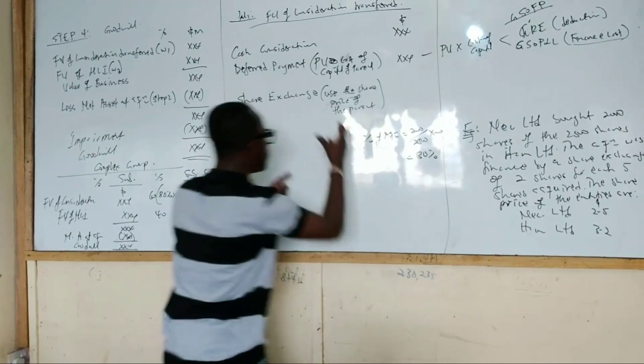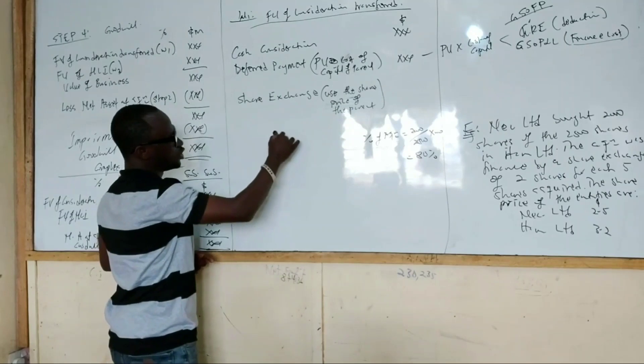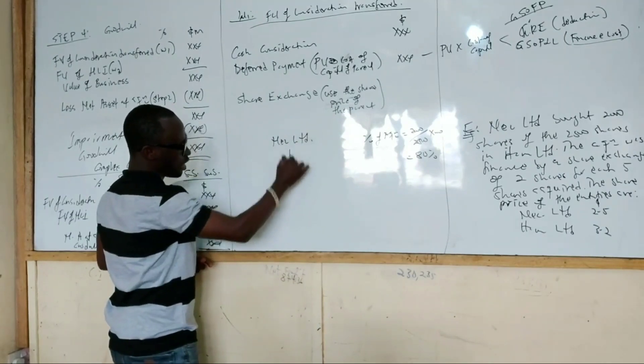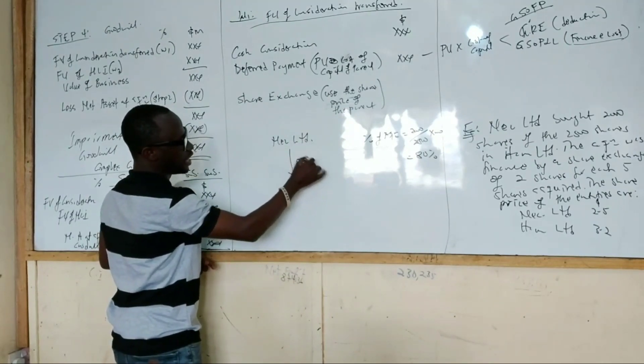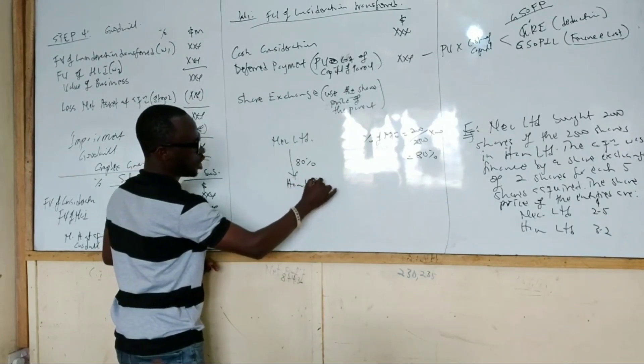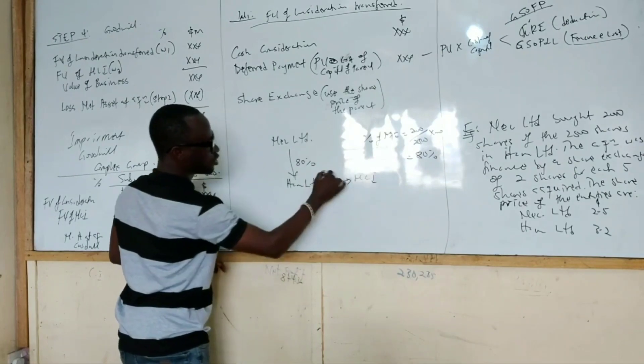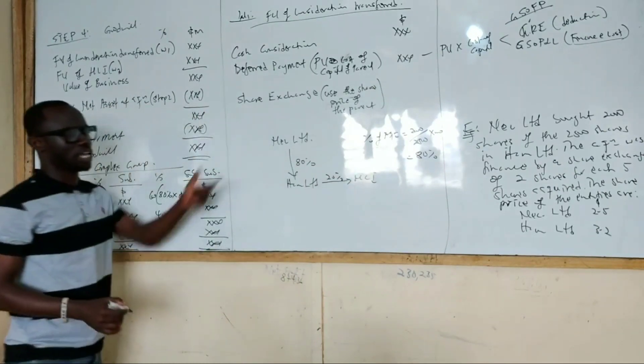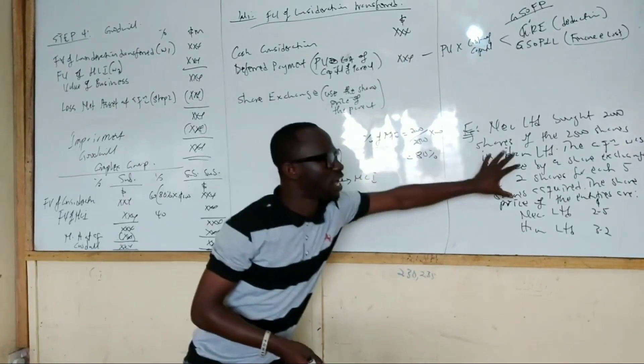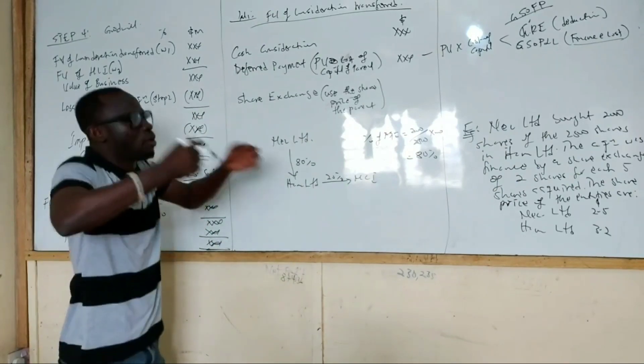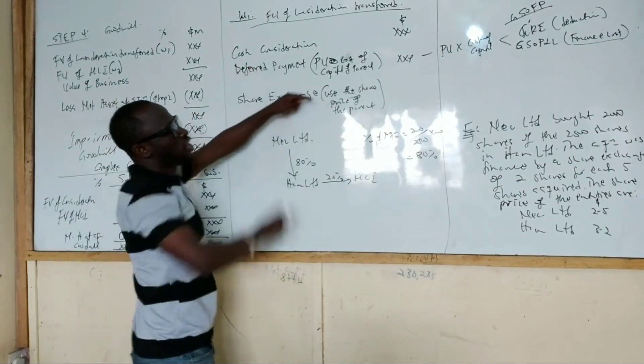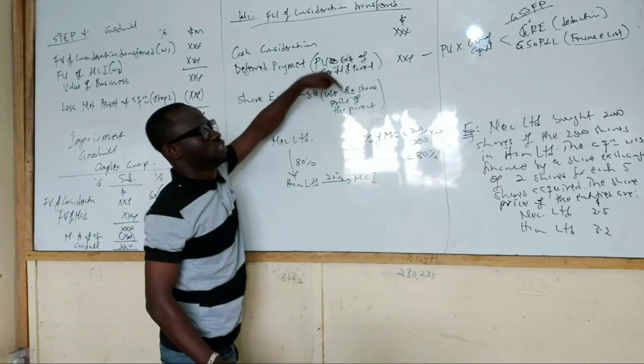So if we want to draw a group structure, it will be NEC Limited having 80% in HAM Limited with an NCI on the side of 20%. So that's the ownership share. But the thing is financed by a share exchange. Remember what I said. If the share exchange uses the parent's share price.